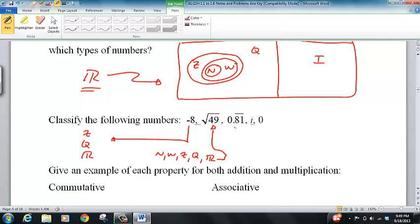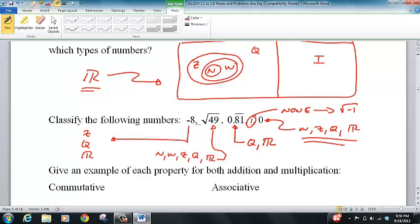0.81 repeating is a rational number, so we go with Q and it's a real. i is actually none because it stands for the square root of negative one, which is an imaginary number and does not fall in the rational field. Zero is everything except natural numbers - it's a whole number, integer, rational number, and real.